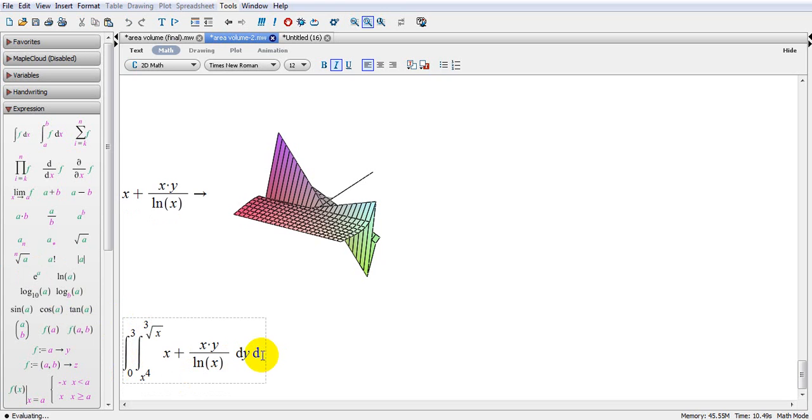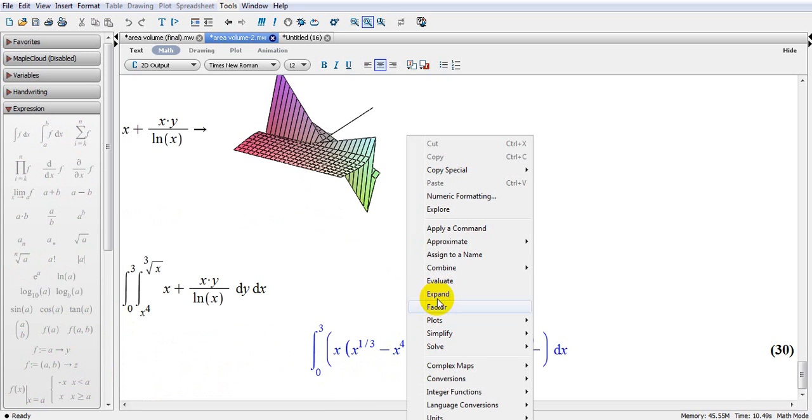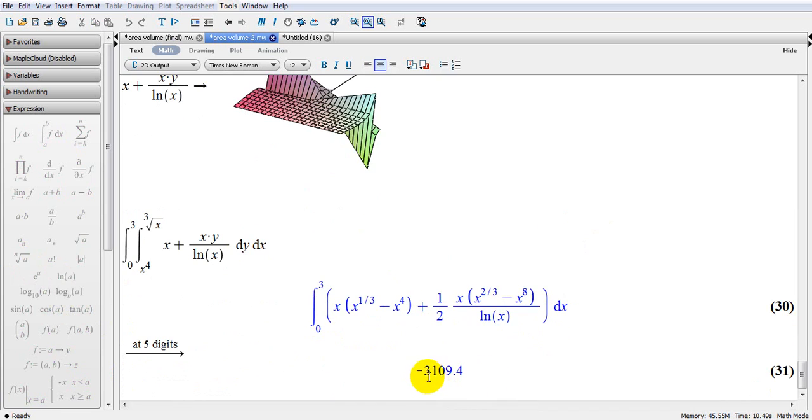As I'm done here, I click here, right click, approximate, and 5 decimals. So this would be my answer.